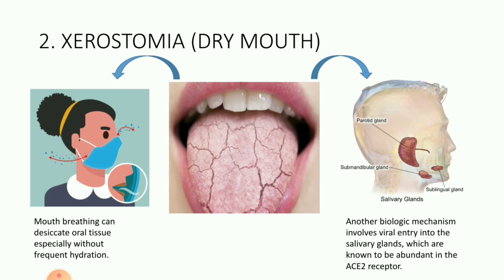Next is Xerostomia, which is also called dry mouth. The two basic reasons for Xerostomia: first is because of the continuous use of masks — mouth breathing desiccates the oral tissue, and frequent dehydration leads to Xerostomia. The second reason is the vulnerability of the salivary glands to the coronavirus. Another biologic mechanism involves viral entry into the salivary glands, which have numerous ACE2 receptors. As the coronavirus has high affinity for ACE2 receptors, it enters the salivary glands very easily, leading to Xerostomia.